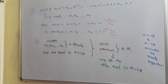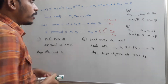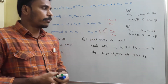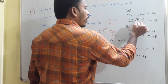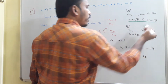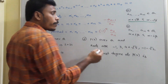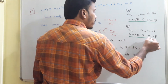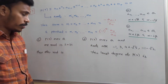This is the second point. Based on this, we summarize: if the coefficients are rational numbers, then α+√β and α-√β occur together as roots. And if the coefficients are reals, then α+iβ and α-iβ occur together as roots.